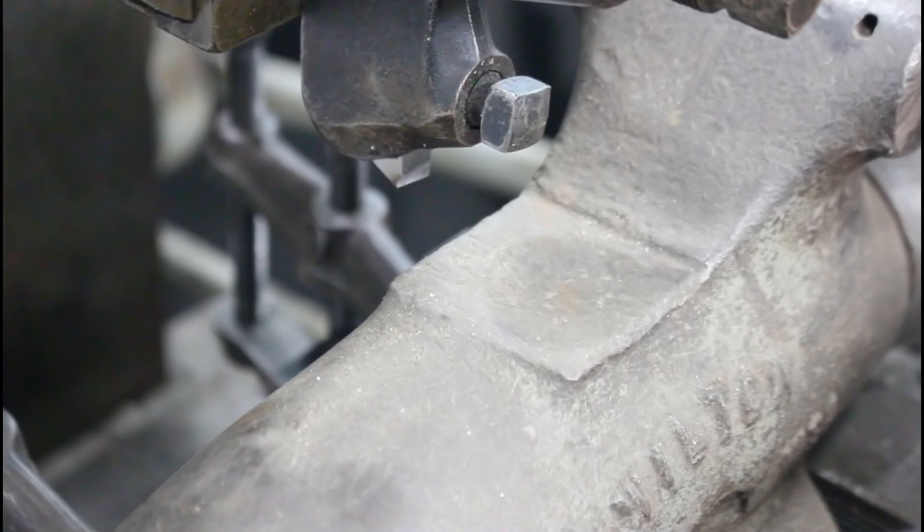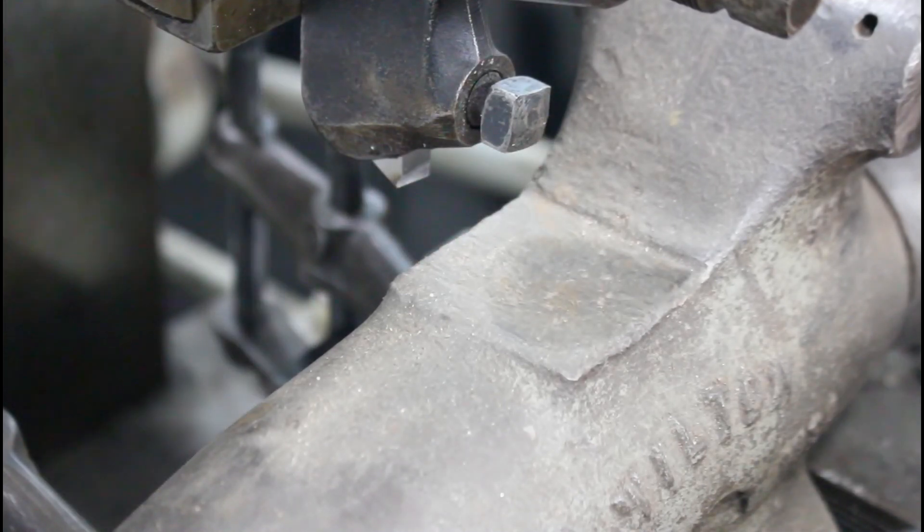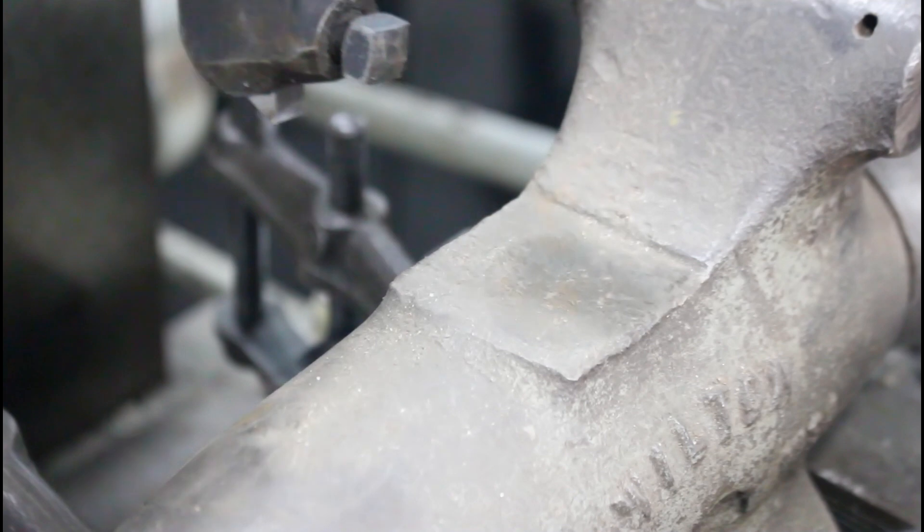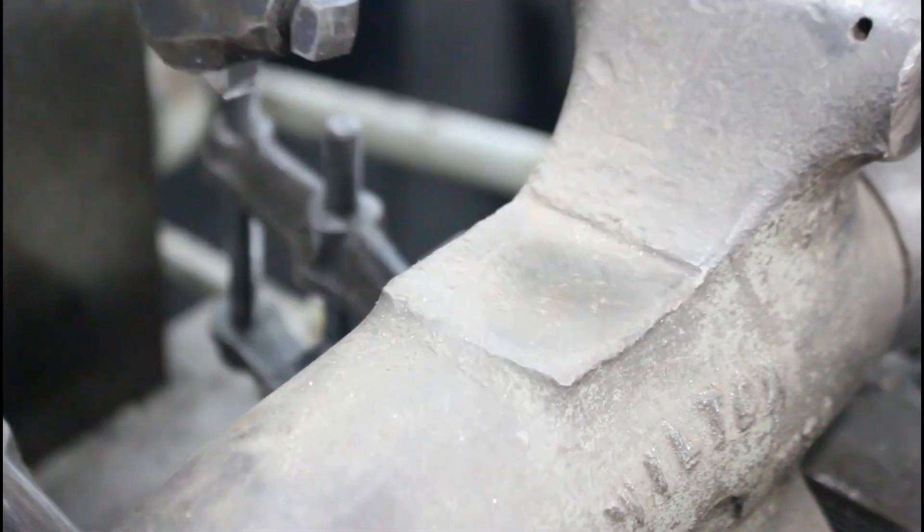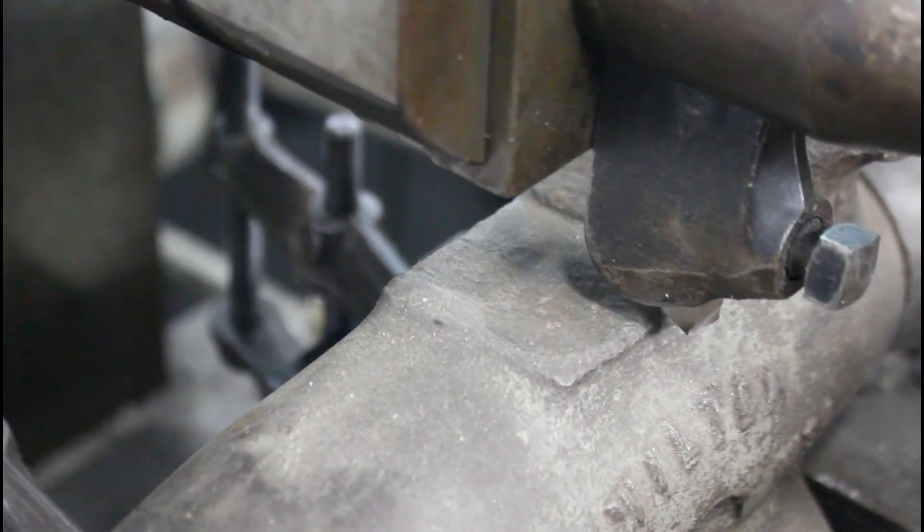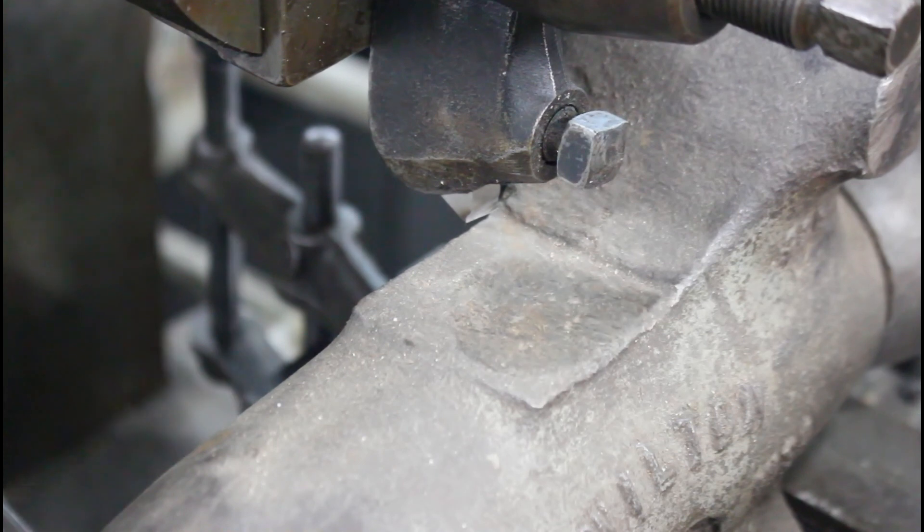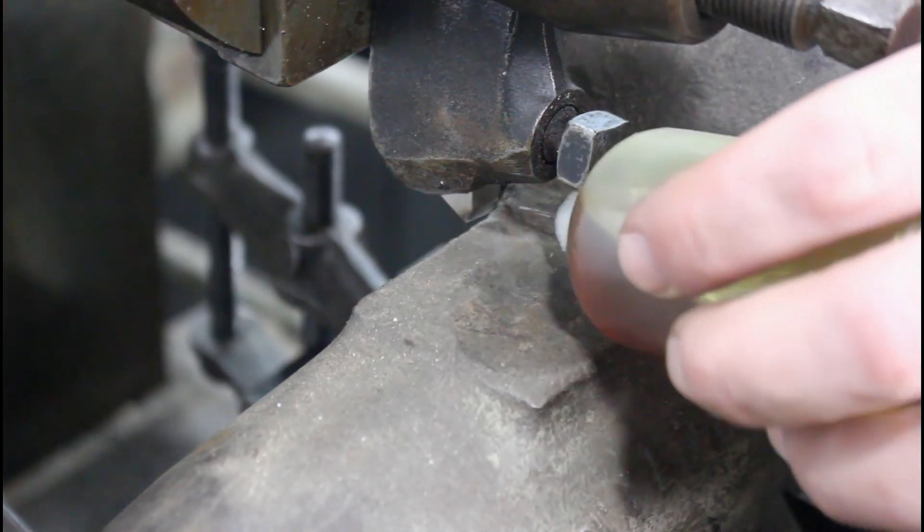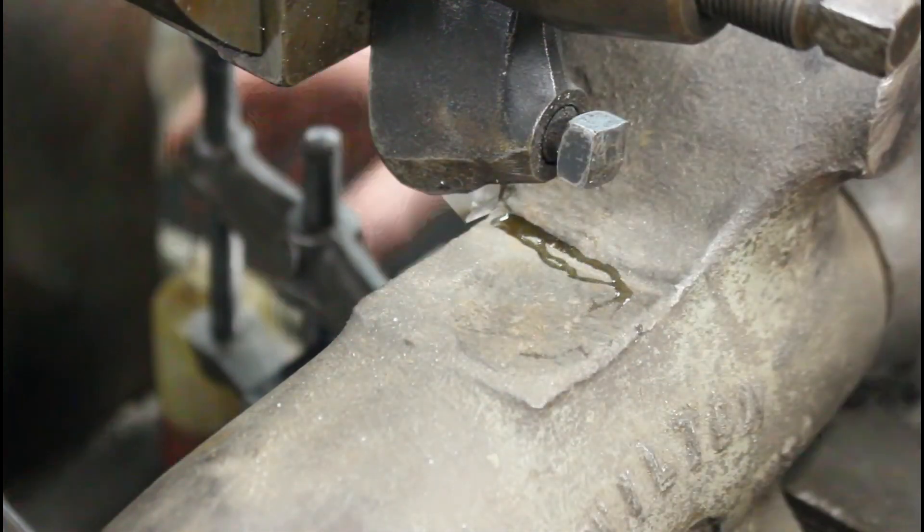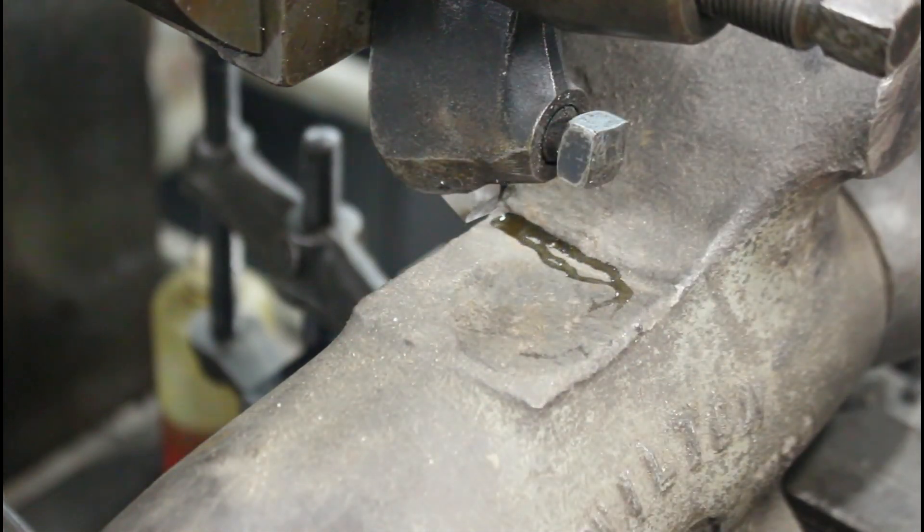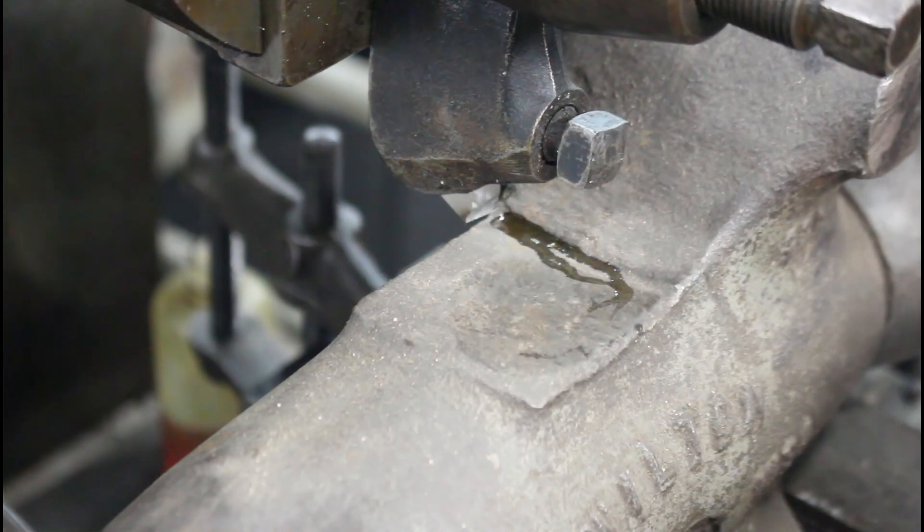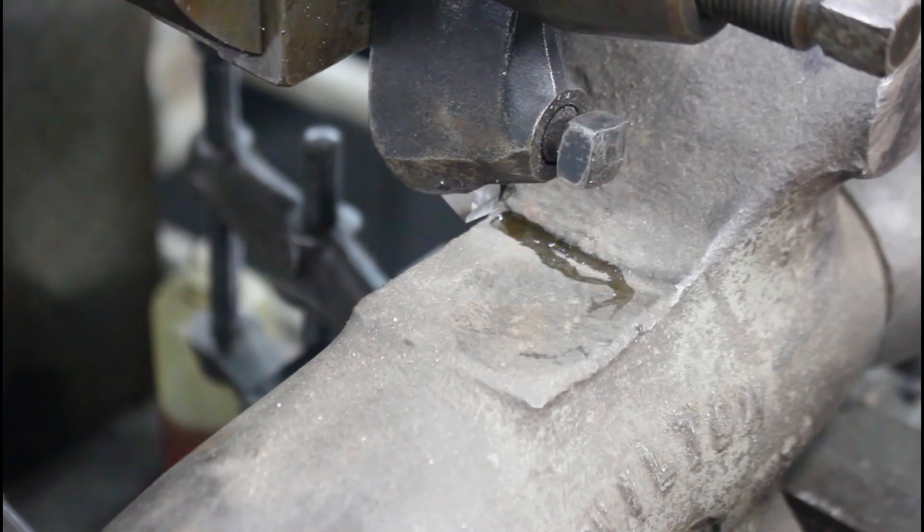So first thing I'm going to do is make sure my table is running in the correct direction, which it would not have been. I'm going to start doing a tiny little skim cut here. We'll see what we get. I'm not too worried about this thing being parallel with the base. Ideally in a perfect world I would square this thing up, but it's more for looks than anything to me. I don't really use that. I got an anvil.